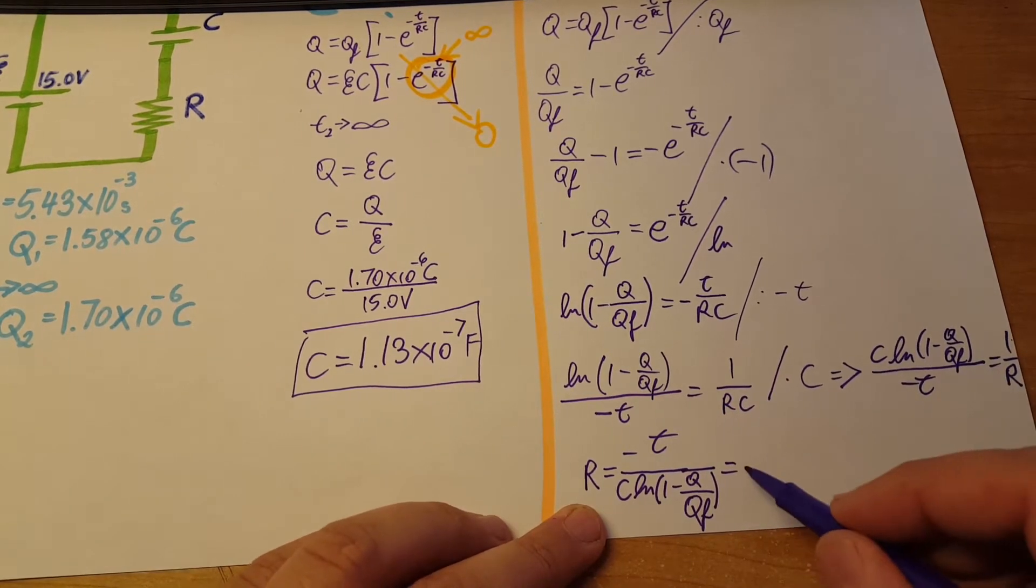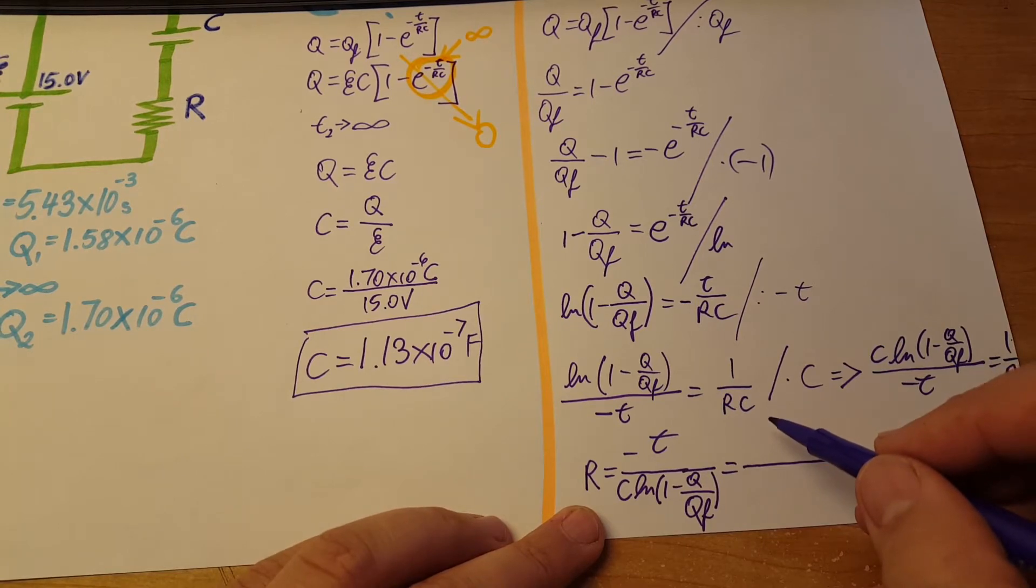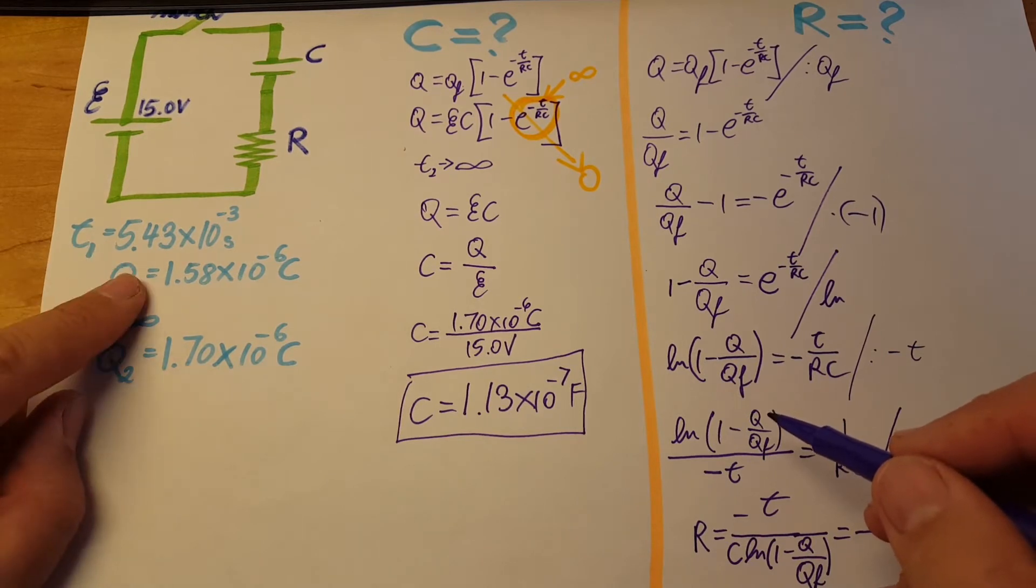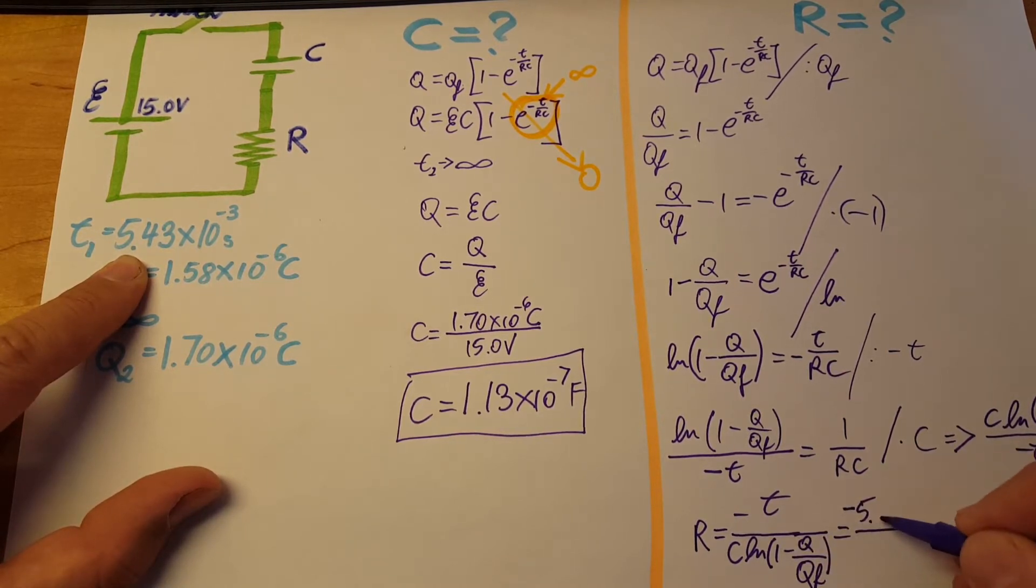Now we plug everything in. For R, for t, we're gonna use t1, so that's negative 5.43 times 10 to the negative 3 seconds.